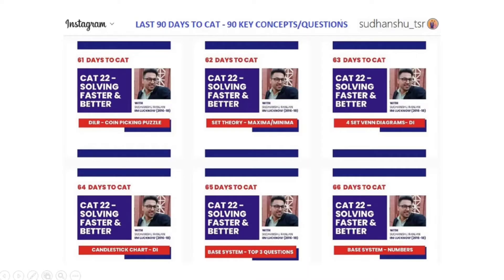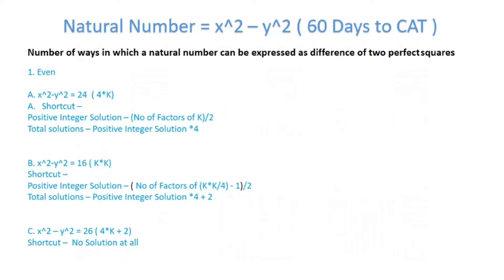Hello everyone, hope you're all doing great. In the last part we had done DILR coin picking puzzle, and now in this part we'll talk about a very interesting problem: expressing a natural number as a difference of perfect squares. This is a very important concept from number system and factors — we'll try to understand the concept and shortcuts as well.